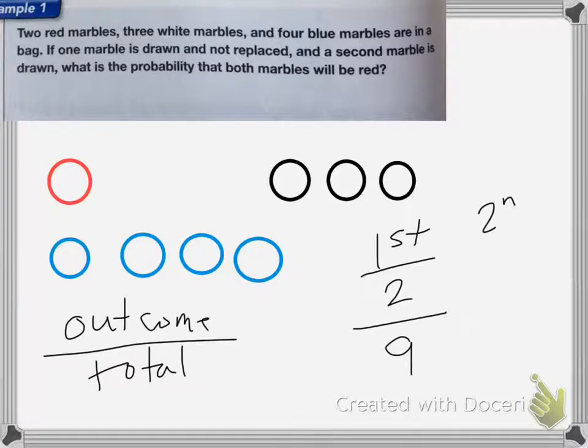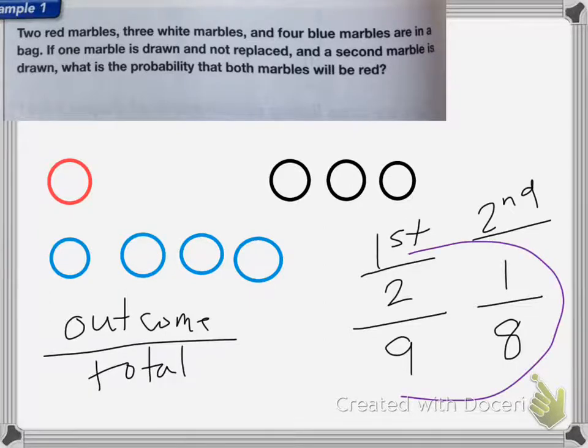For my second draw, I want to draw a red marble again, but this time there's only 1 red marble, and there's a total of 8 marbles in my bag. To find the total probability, I have to take these 2 probabilities and multiply them together.